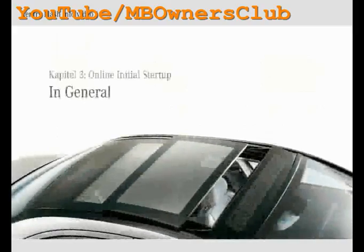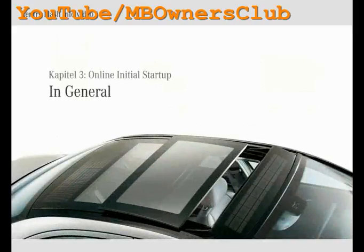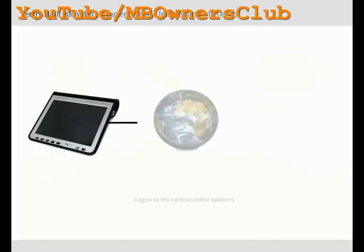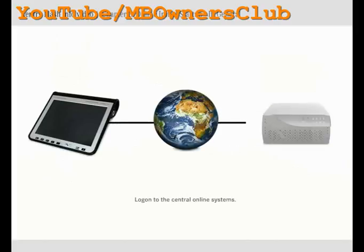In this chapter you will first find out how an online initial startup is performed in general. In order to perform an online process, you have to log on to the central vehicle documentation systems with the XcentriFlash username, user ID and password. After the login, there is an automatic test to ensure that the central systems are responding.